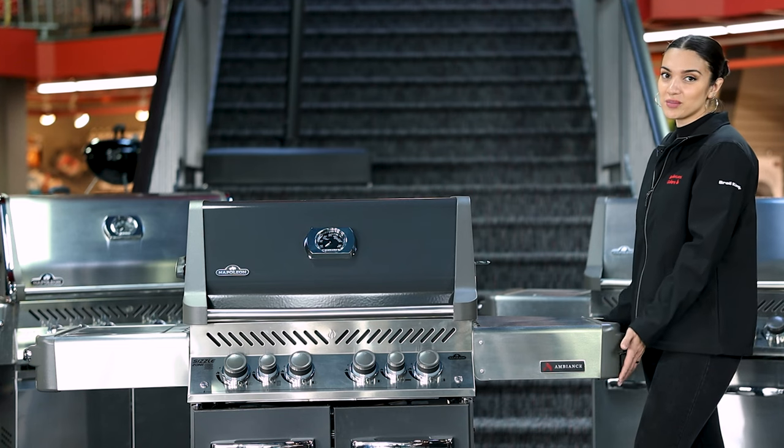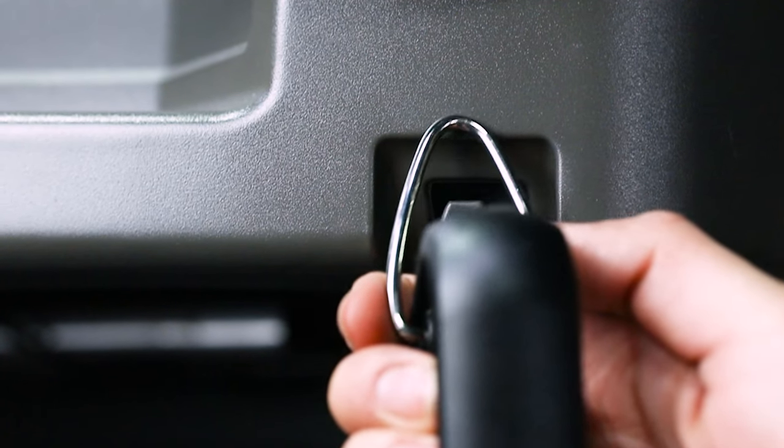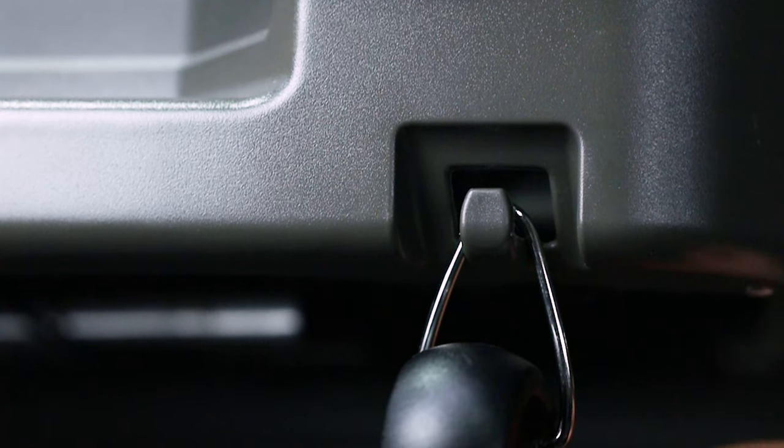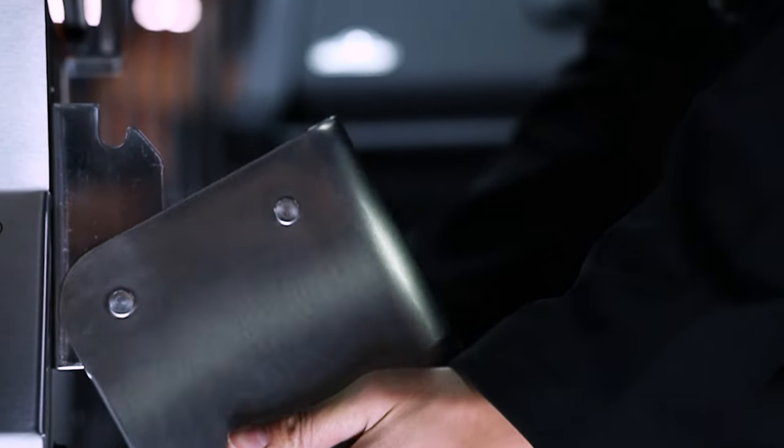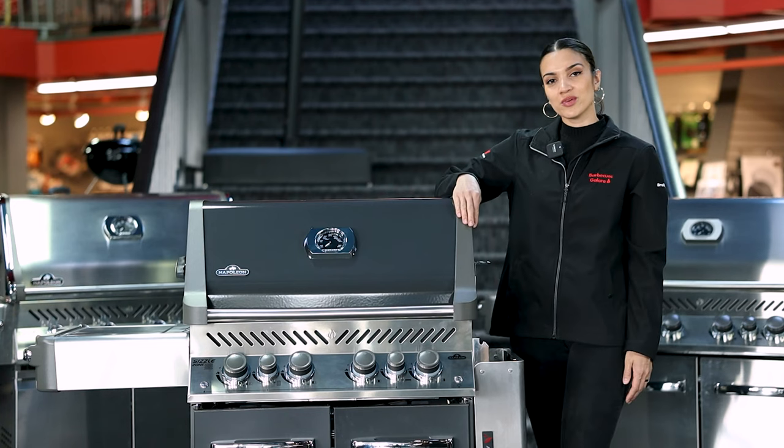Both side shelves feature a couple of hooks that conveniently allow you to hang brushes or spatulas that you'll need on hand while barbecuing. The right side shelf folds down, giving you more space when you need it.